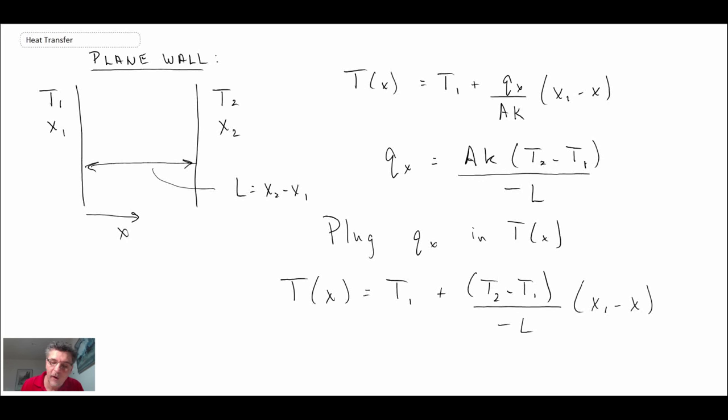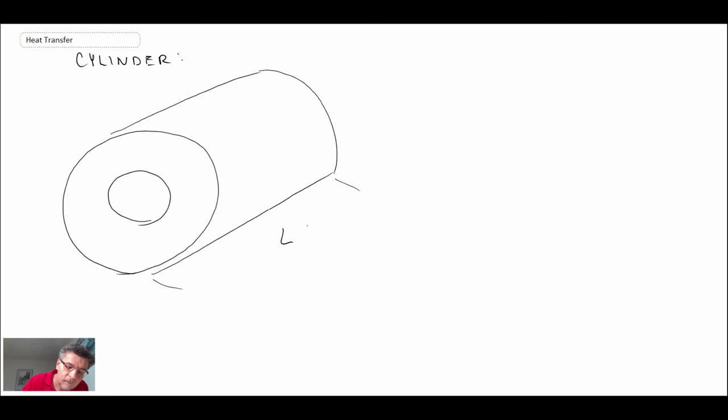Okay, so that was for a plain wall. We also looked at a cylinder. So that was the geometry for the cylinder, r_i, r_outer. And what we obtained here was the temperature distribution. And if you recall, for the cylinder, it resulted in a natural logarithm.